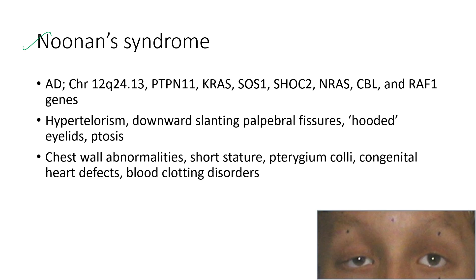Next is Noonan syndrome. It is an autosomal dominant condition characterized by hypertelorism, downward slanting palpebral fissures, hooded eyelids, and ptosis. The systemic features include chest wall abnormalities, short stature, pterygium colli, congenital heart defects, and blood clotting disorders.